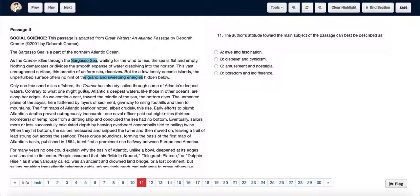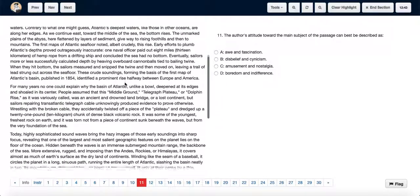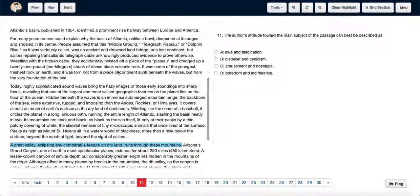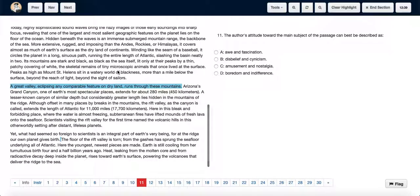Also we can see the name itself. The passage is adapted from Great Waters, an Atlantic passage by Deborah Cramer. So from here itself, we can see it's called Great Waters and it's all about how vast and fascinating the waters are and how there's a great valley that runs through the mountains.